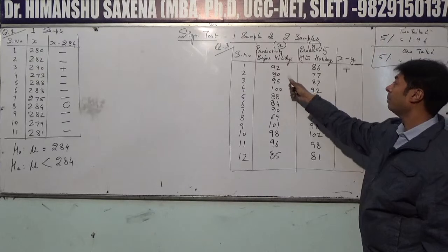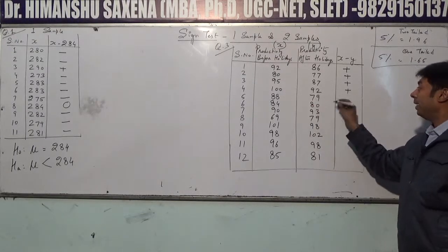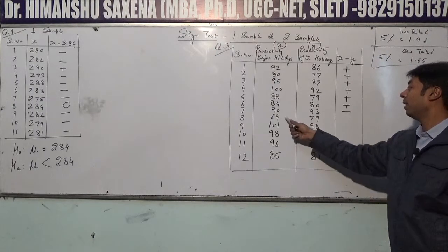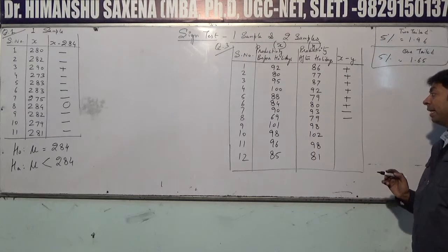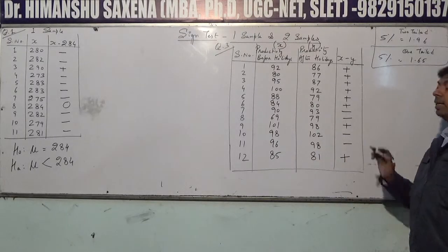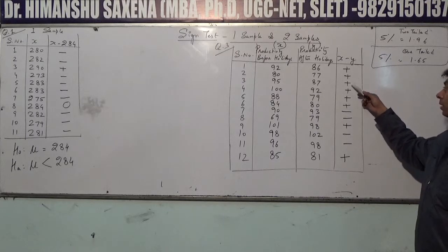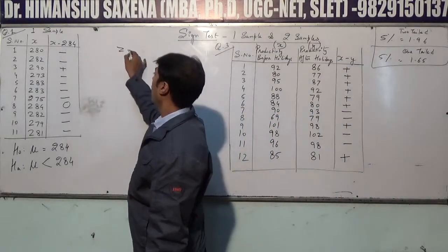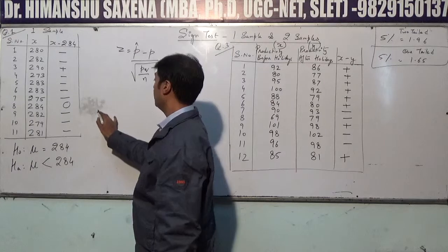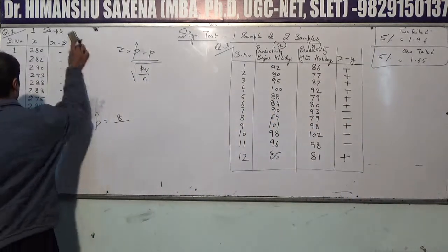Subtracting second from first: 92−86 = plus, 80−77 = plus, 95 greater = plus, 180 greater = plus, 84−80 = plus, 90 is smaller = minus, 69 is smaller = minus, 79−101 greater = plus, 98 is smaller = minus, 96 is smaller = minus, 85 is greater = plus. Total: 8 positive, 4 negative, 12 valid signs.